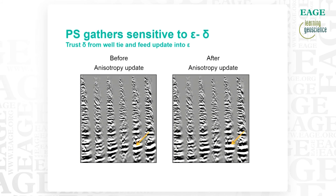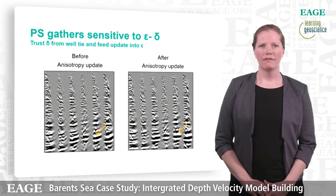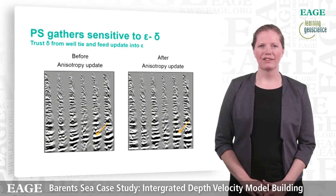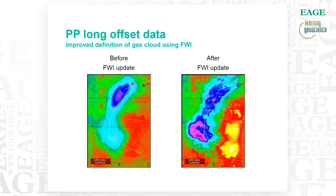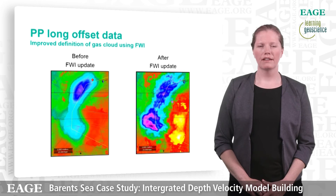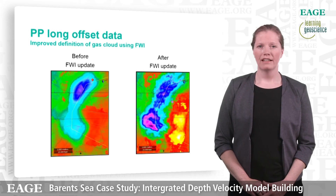Another thing with the PS gathers is that they are sensitive to the difference between Epsilon and Delta. We have chosen to trust the Delta from the well ties and feed the update into the Epsilon. On the right hand side we can clearly see how the update flattened the gathers better. This can then again be used in the full waveform inversion. An example of the full waveform inversion showed that it gave a better definition of the gas. However, we observed that we always had to run a tomography to flatten the gathers and to get the well tie after the FWI update.